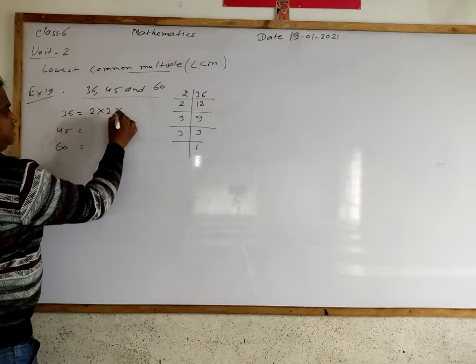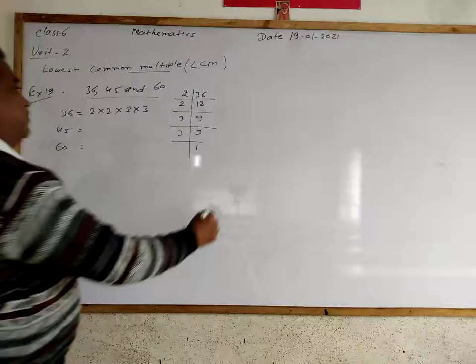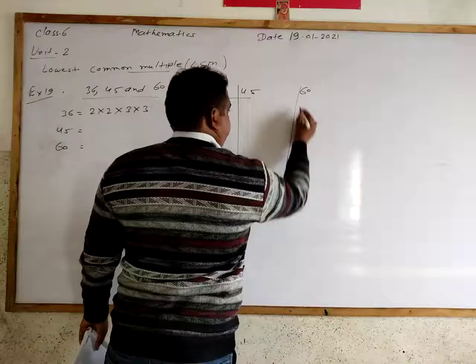So prime factor of 36 are 2 multiply 2 multiply 3 multiply 3. Now prime factor of 45 and 60.